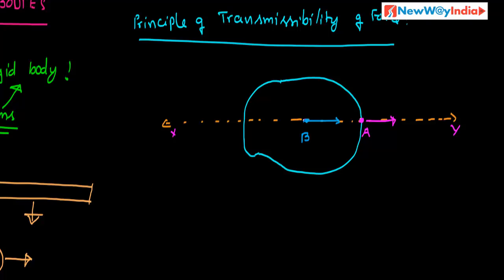Here we have two forces — R and P which are equal and opposite, so they counterbalance each other and cancel out. The remaining force is S, acting at point B, which causes the motion of the body. So because of this force S, the body will move.